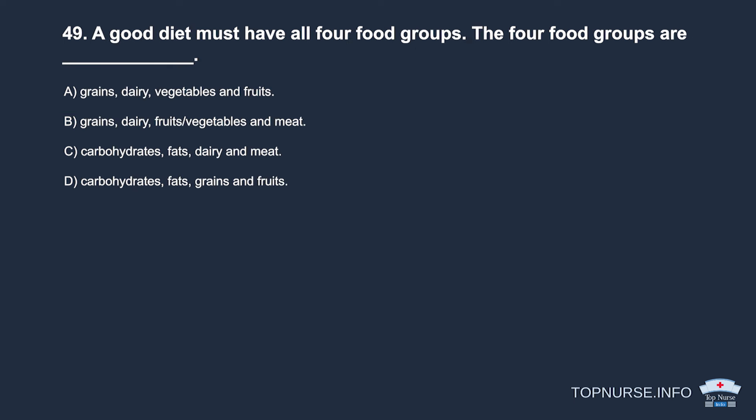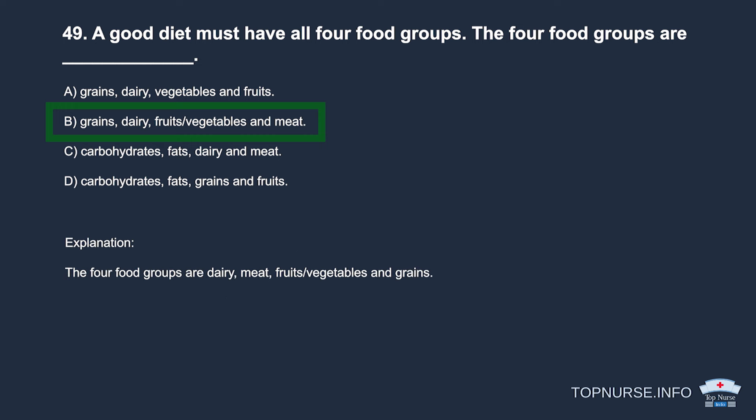Question 49: A good diet must have all four food groups. The four food groups are: a. Grains, dairy, vegetables, and fruits. b. Grains, dairy, fruits/vegetables, and meat. c. Carbohydrates, fats, dairy, and meat. d. Carbohydrates, fats, grains, and fruits. Correct answer: b. Grains, dairy, fruits/vegetables, and meat. The four food groups are dairy, meat, fruits/vegetables, and grains.